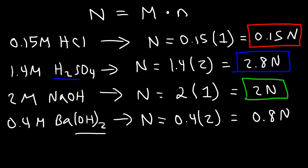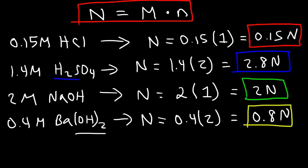That is how you calculate the normality of a solution if you're given the molarity using that formula. Now let's try a new problem: what is the normality of a solution that contains 50 grams of sulfuric acid dissolved in 15 liters? We're going to do this two ways — first find the molarity then find the normality, and then use a second method to find the normality directly without using molarity. So first let's calculate the molarity.